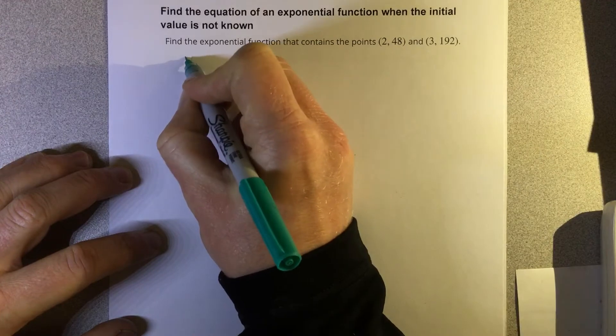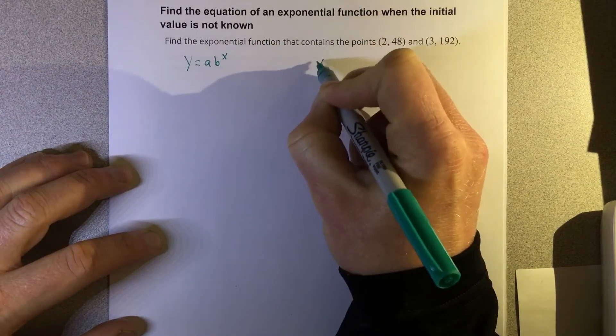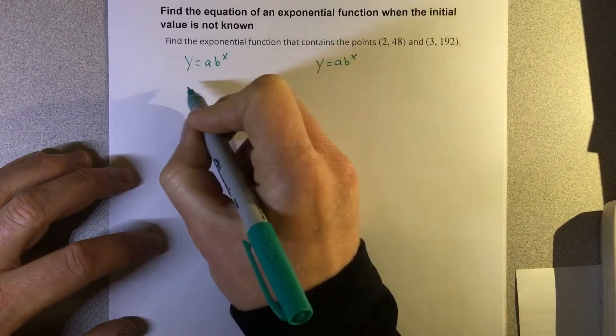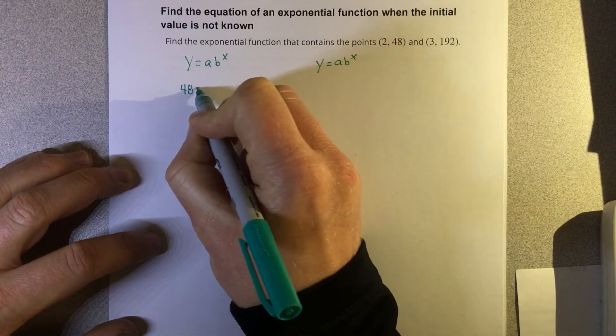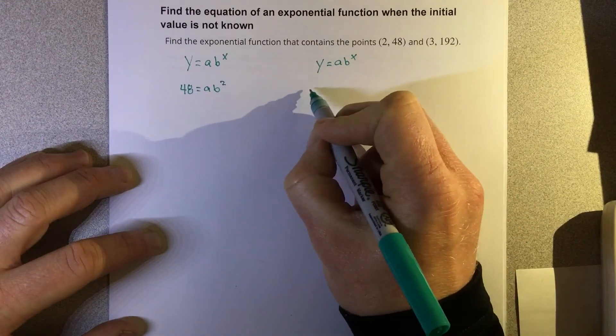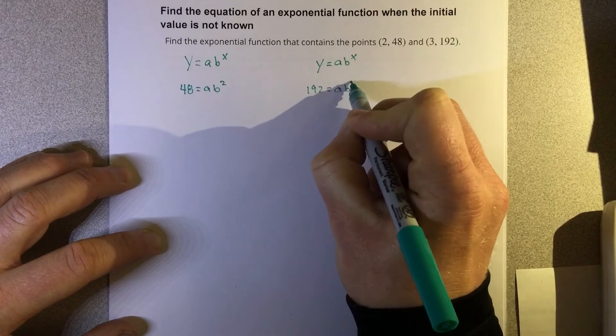We're going to start with y equals ab to the x and plug in the coordinates into each equation. So we end up with 48 equals ab squared and 192 equals ab cubed.